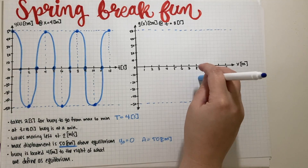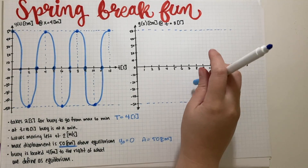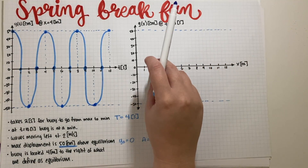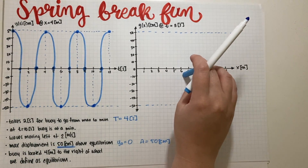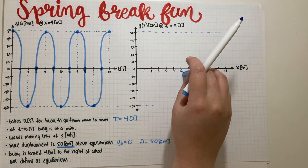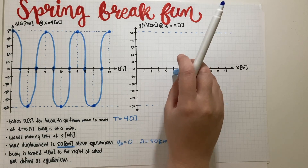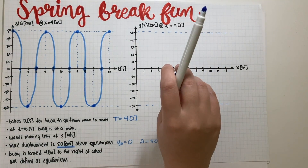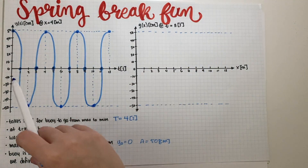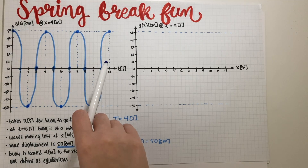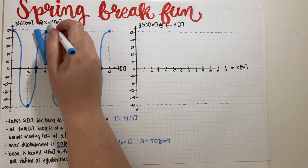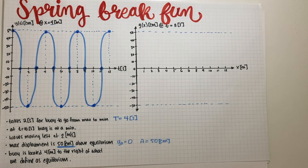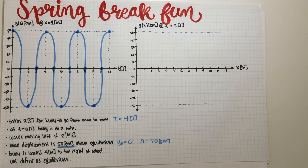The time-domain graph is done. Now we need to figure out the spatial (position) graph. The buoy is located four meters to the right of the origin, so x = 4.